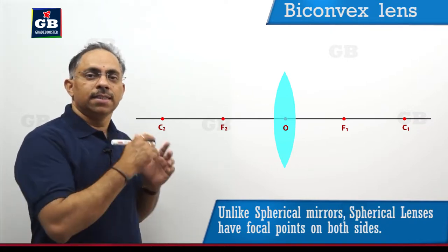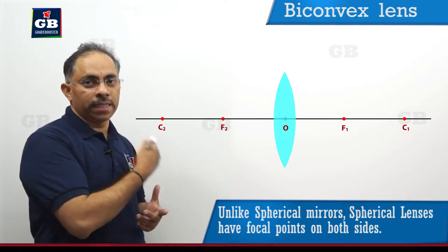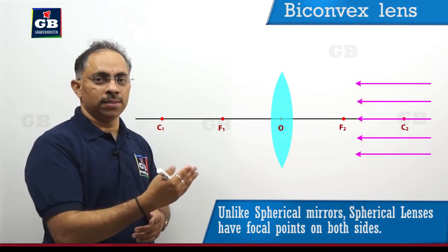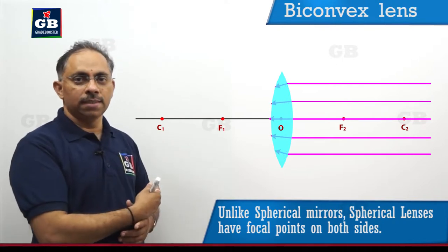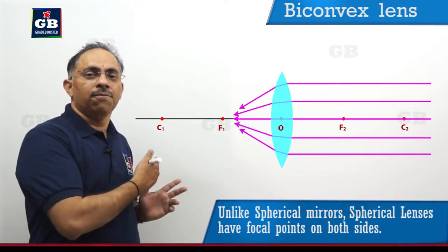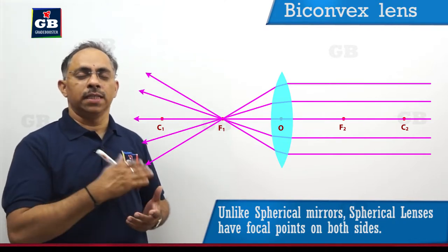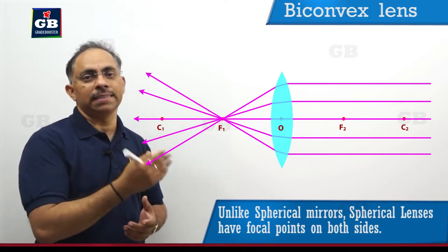If I take the light rays traveling from right side of the lens to the left side, then all these parallel beam of light rays, once they are traveling from the right side to the left side of the lens, they will again converge at one particular point on the left side. So this way we will have principal focus on either sides of the lens.